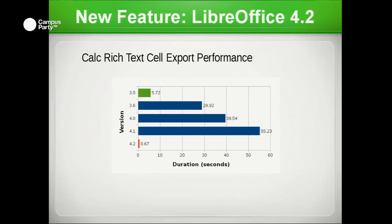Another example of Kohei's work is rich text export performance. We really screwed this up in some earlier versions, but in 4.2 we're down to fractions of a second to handle nasty test-case documents with awkward rich text in cells.